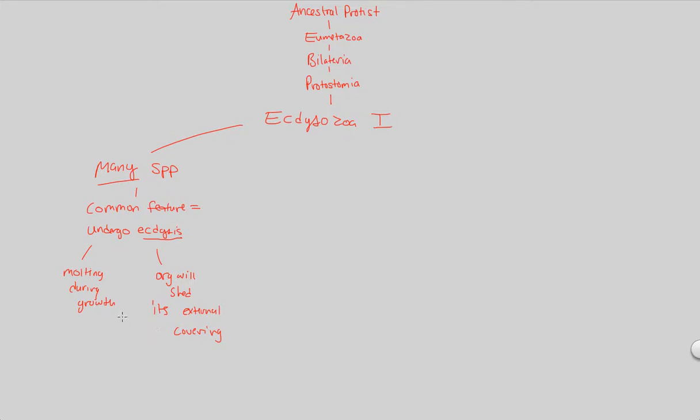So that's a commonality amongst this huge group of organisms that undergo ecdysis. Now let's put some examples, some phyla, underneath this large group of organisms that are Protostomia, Bilateria, from an ancestral protist. The first phylum that we'll do in this video and the next is the phylum Nematoda.